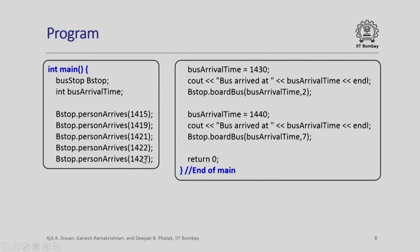We know that 2 buses arrive in our illustration. The first bus arrival time is set to 14:30. We print that information and then call board_bus. Since there are only 2 seats available, only 2 of the 5 people in the queue will board that bus. The next bus arrives at 14:40 as per our illustration. This time there are 7 seats, and as noted in the illustration, everybody remaining in the queue will be accommodated. This is the end of the main program.